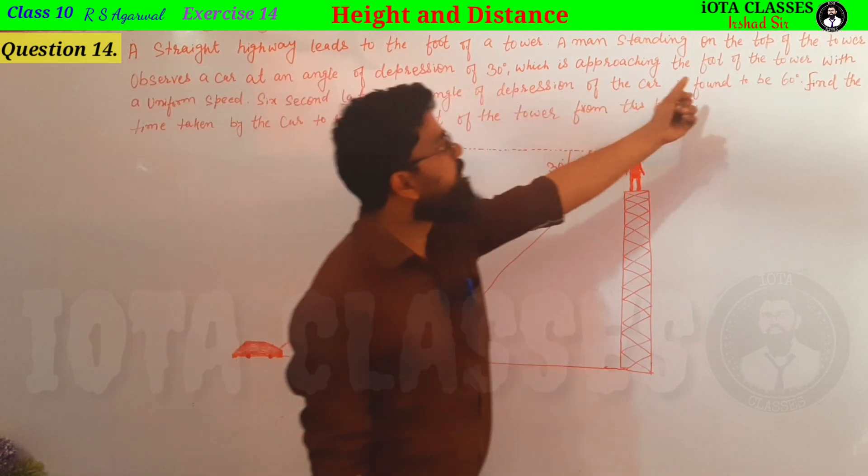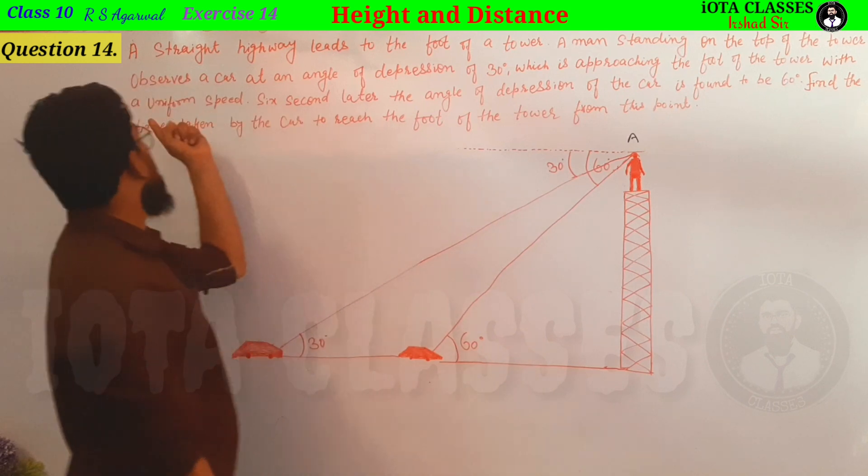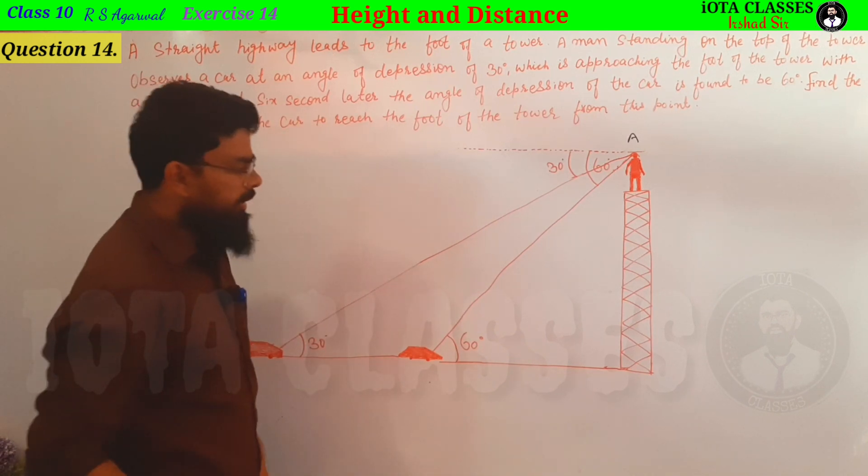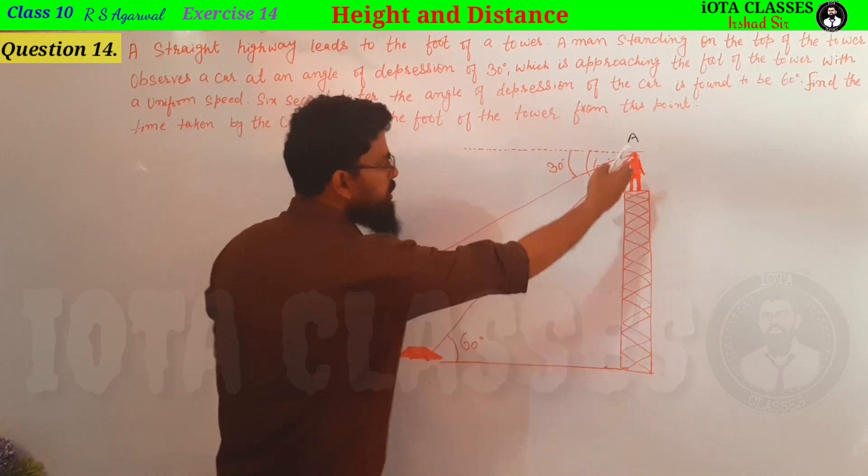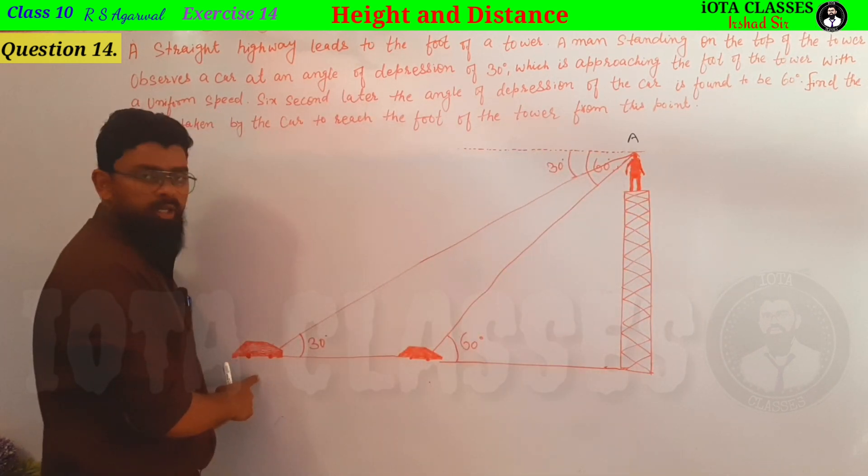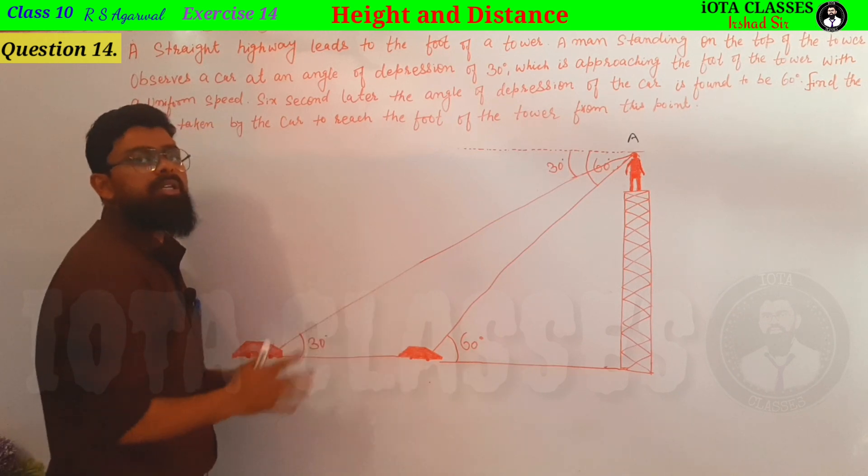Which is approaching the foot of the tower with uniform speed. What is saying? A man standing on the tower, there is a car. Observe the car which is uniform speed running.